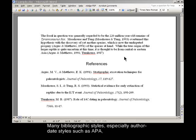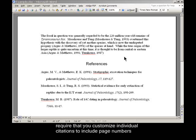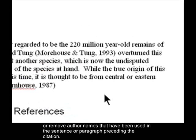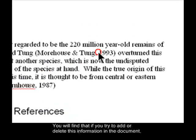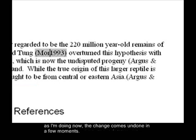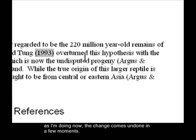Many bibliographic styles, especially author-date styles such as APA, require that you customize individual citations to include page numbers or remove author names that have been used in the sentence or paragraph preceding the citation. You will find that if you try to add or delete this information in the document, as I'm doing now, the change comes undone in a few moments.